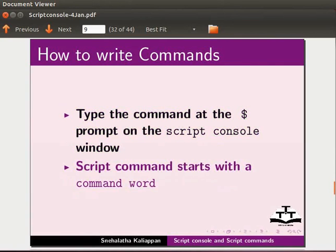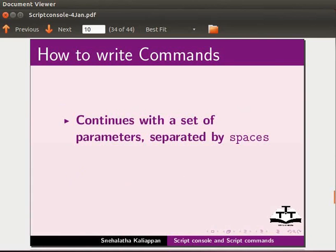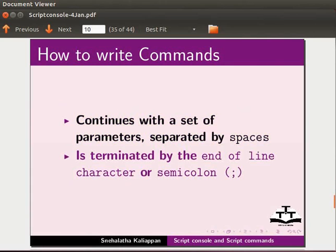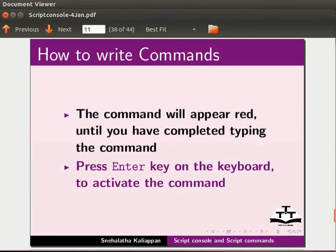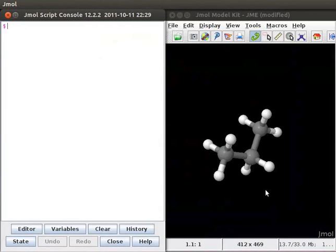Type the command after the dollar prompt on the script console window. Script commands start with a command word, continue with a set of parameters separated by spaces, and are terminated by the end of the line character or semicolon. The command line will appear red until you have completed typing the command. Press Enter on the keyboard to activate the command.